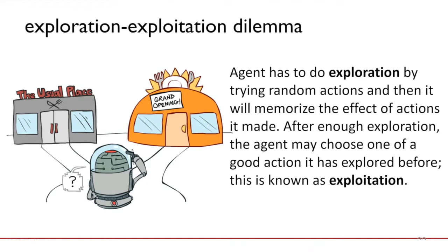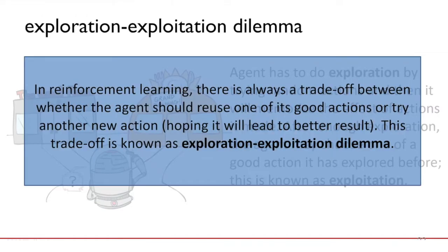Do we need to continue doing the thing we are more satisfied with or more sure will lead us to a good result? Or maybe we can do some kind of exploration, have some new experience, and based on that take other types of actions. In reinforcement learning, there is always a trade-off between whether the agent should reuse one of its good actions or try another new action. This is the exploration-exploitation dilemma.